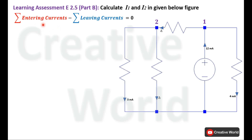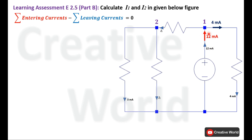We will solve this problem using Kirchhoff's current law, where the sum of entering currents minus leaving currents equals zero. Starting at node 1, we identify the entering and leaving currents: 12 mA is entering, while 4 mA and I1 are leaving from this node.